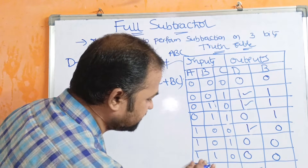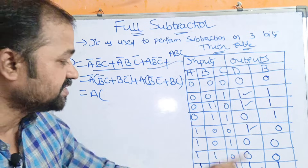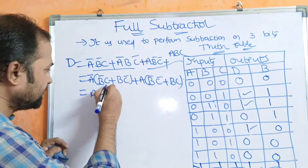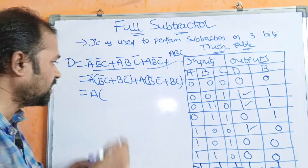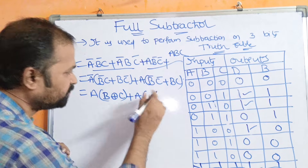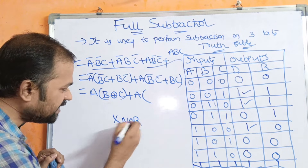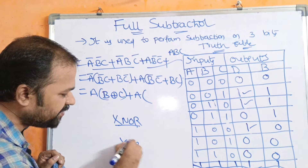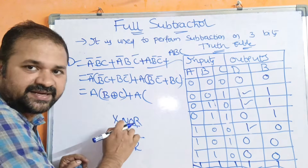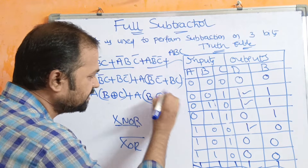The last combination is all ones, so difference is 1 and borrow is 1. The terms B-bar·C-bar + B·C represent the exclusive-NOR formula. We know that exclusive-NOR is the complement of XOR. So we can write this as (B XOR C)-bar.